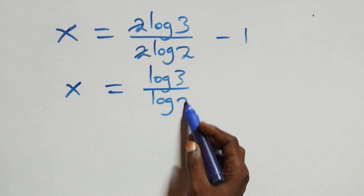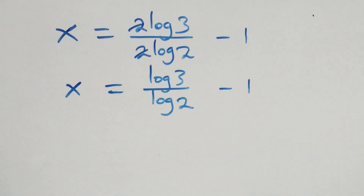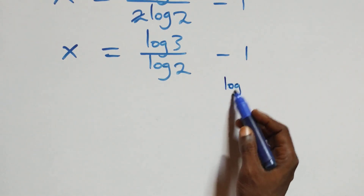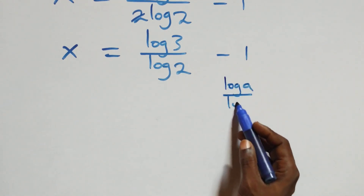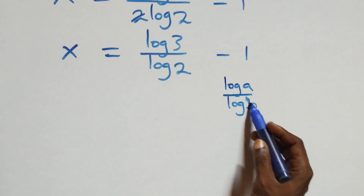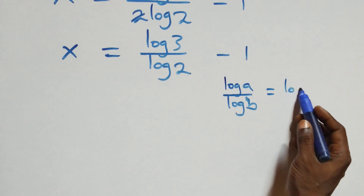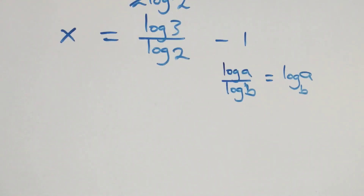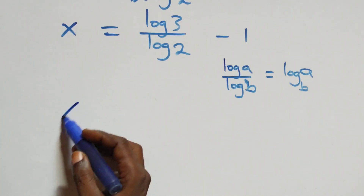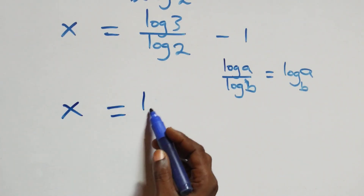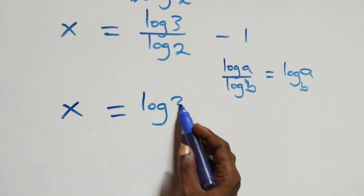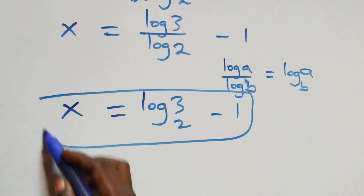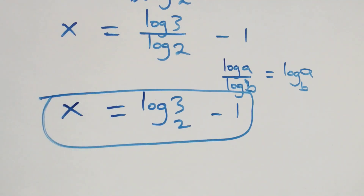Applying the change of base rule, where log a over log b is the same as log a to base b, what we have becomes x equals log 3 to base 2 minus 1. So the value of x is log base 2 of 3 minus 1.